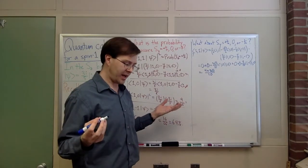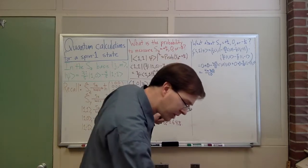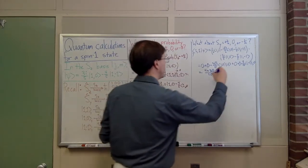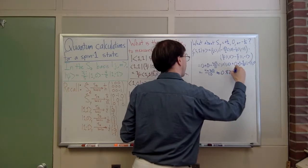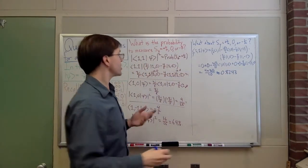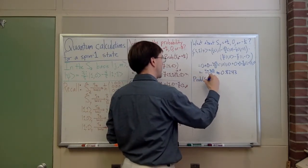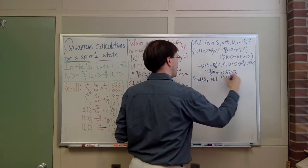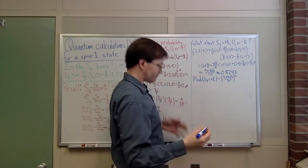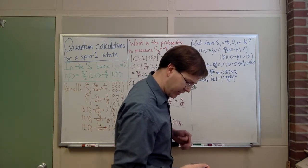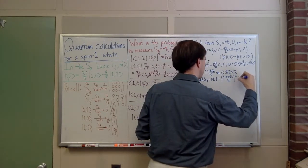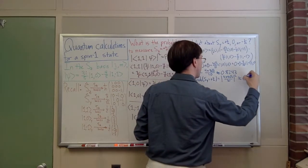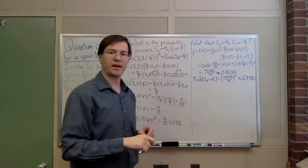So the result of this calculation is (4 + 3√2)/10, which numerically is about 0.8243. The probability of measuring Sy = +ℏ is the absolute square of that, which is about 67.9%.